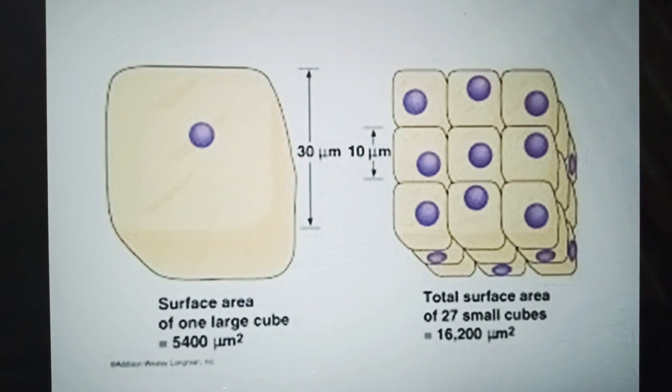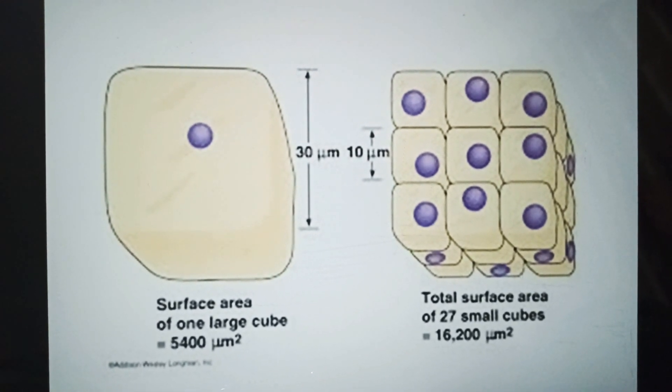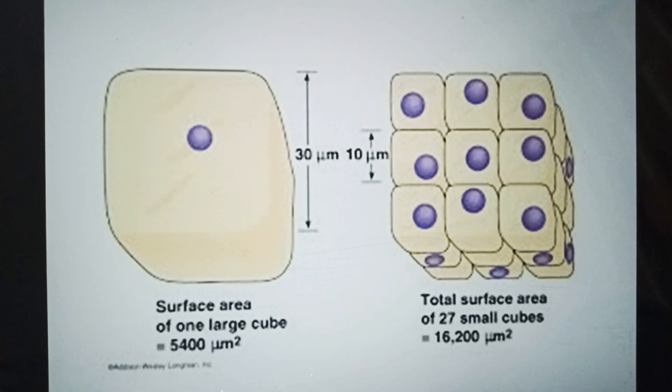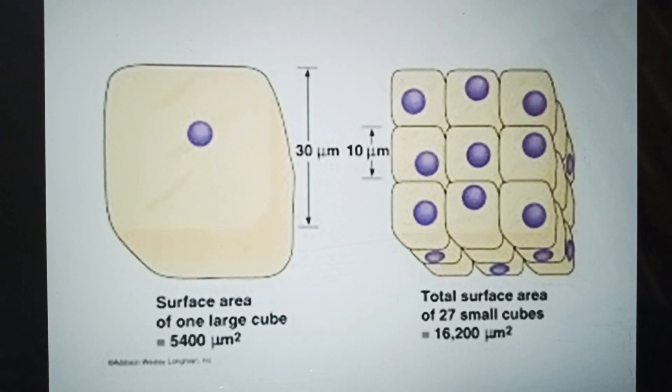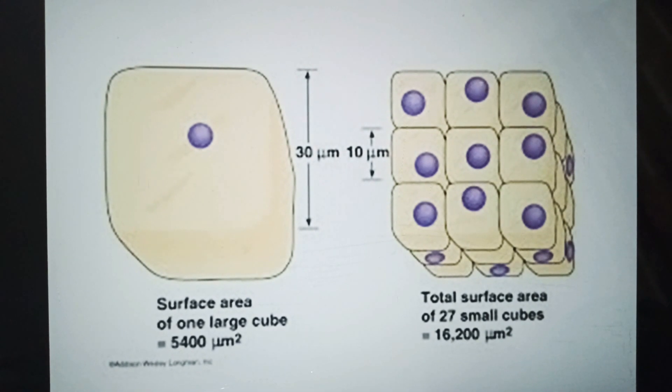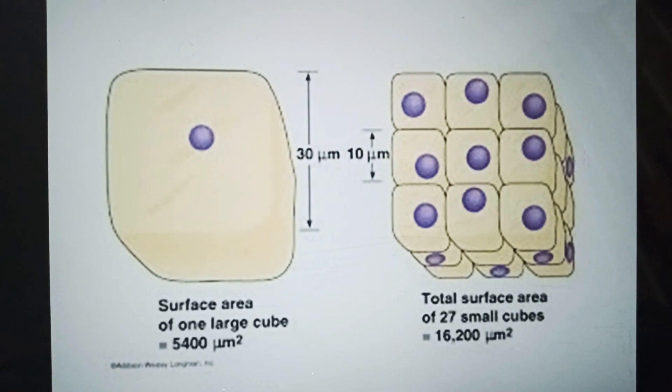Hence we conclude that the membranes of small cells can serve their volumes more easily than the membrane of a large cell.